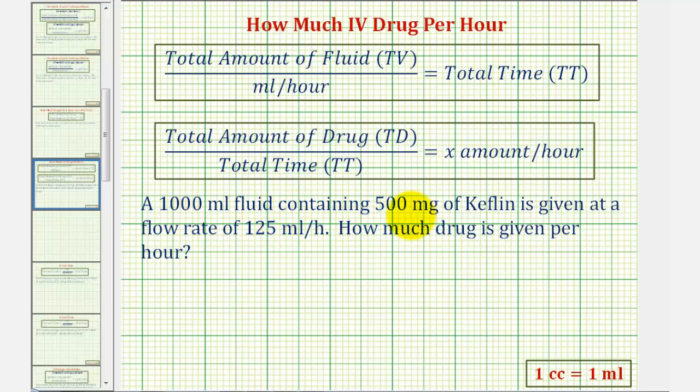A 1,000 mL fluid containing 500 milligrams of Keflin is given at a flow rate of 125 mLs per hour. How much drug is given per hour?